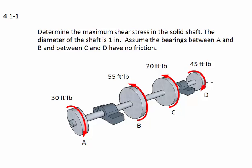Here's the shaft. We see four external torques applied. Here are the bearings between A and B and C and D. They have no friction and therefore are not contributing to the internal torques in the shaft.